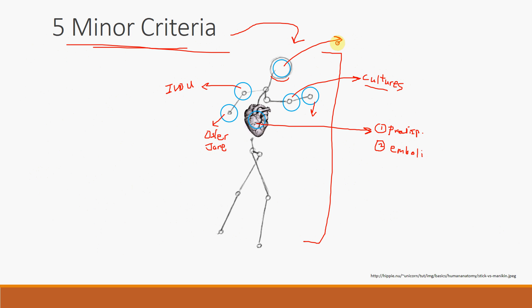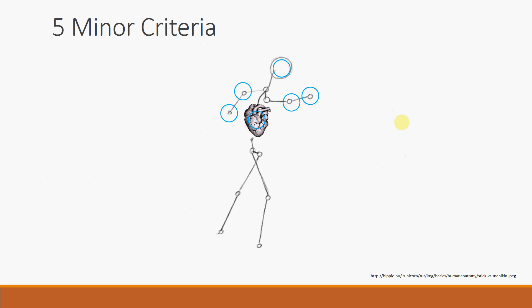Finally, the head is circled because it represents pyrexia, or fever — specifically greater than 38 degrees Celsius. So the five minor criteria are: (1) fever, (2) immunological evidence such as Roth spots and Janeway lesions, (3) cultures that don't meet the major criteria, (4) IV drug use or predisposing heart disease, and (5) septic emboli.